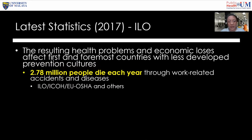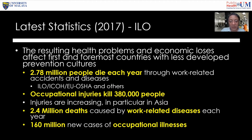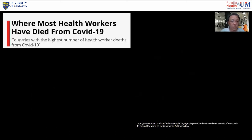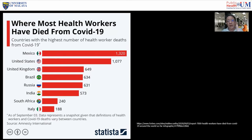Looking at ILO statistics: occupational injuries kill around 330,000 people, 2.5 million deaths are due to work-related diseases, and there were 60 million cases of occupational illness in 2017. Regarding COVID-19, countries with the highest number of healthcare worker deaths included Mexico, the United States, UK, Brazil, Russia, India, South Africa, and Italy. In Malaysia, there were effectively zero occupational COVID-19 deaths among healthcare workers.